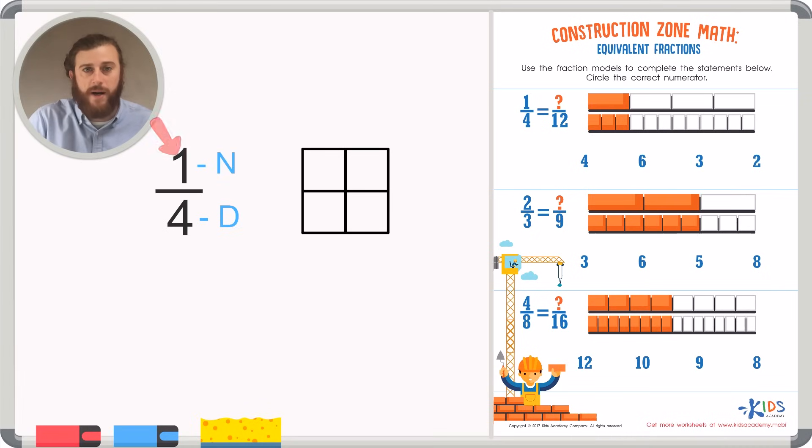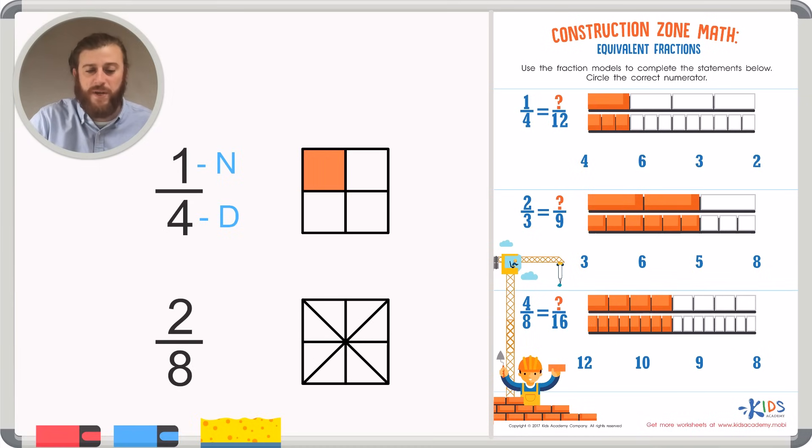The top number is the numerator. The numerator tells me how many of those pieces are shaded in. In this fraction, one is shaded in. To make an equivalent fraction, we want to make a fraction that has the same amount of space shaded in. So, for example, an equivalent fraction to one-fourth could be two-eighths. To show this in a picture, instead of cutting our fraction into four pieces, we'll cut our fraction into eight pieces.